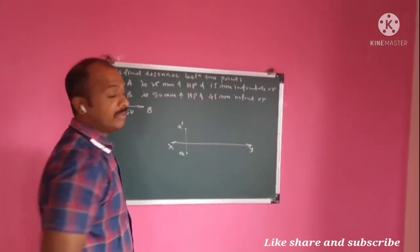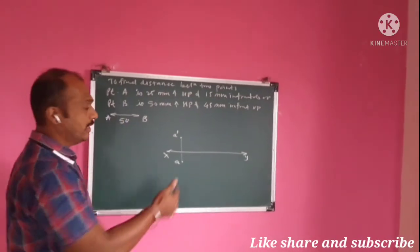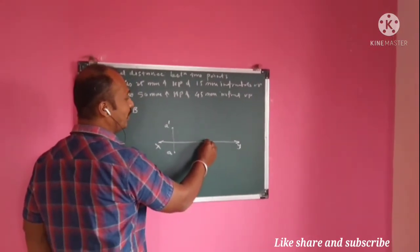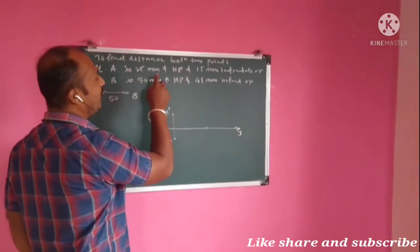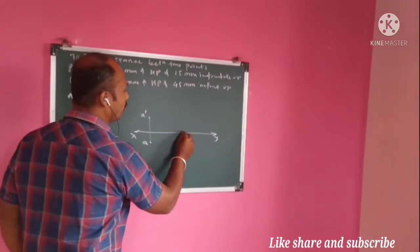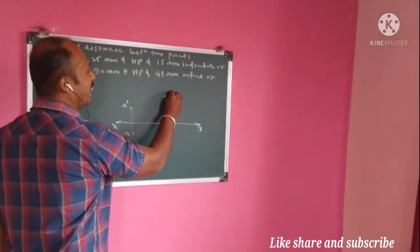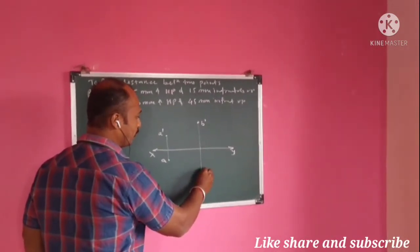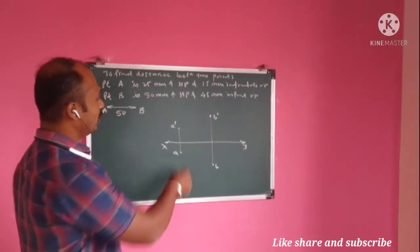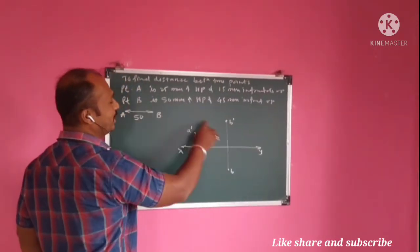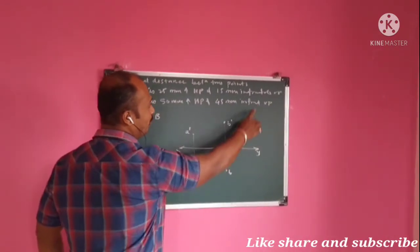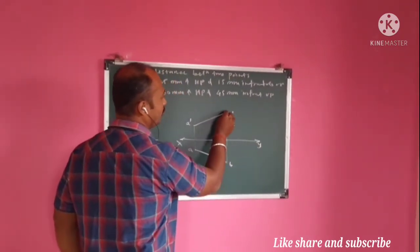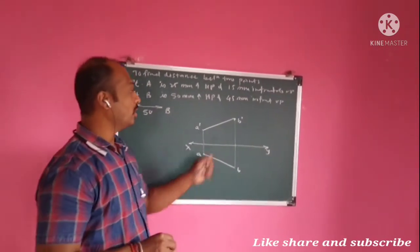The distance between projectors of A and B is 50 mm, so plot 50 mm distance from this projector. Point B is 50 mm above HP, so plot 50 mm above HP — this point is B dash. And 45 mm in front of VP — this point is B. Then join the front view of A to the front view of B, and the top view of A to the top view of B.